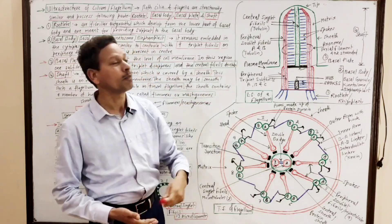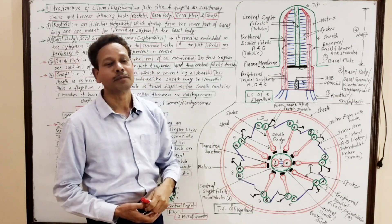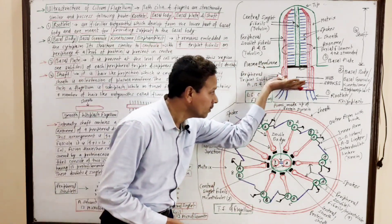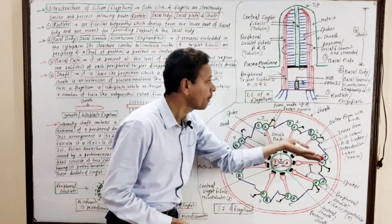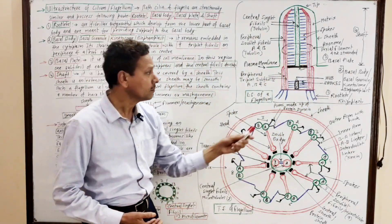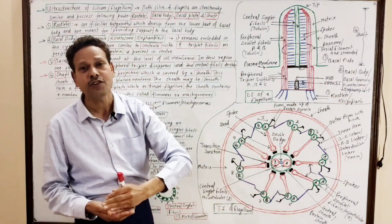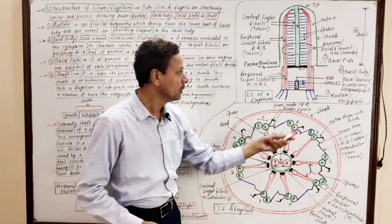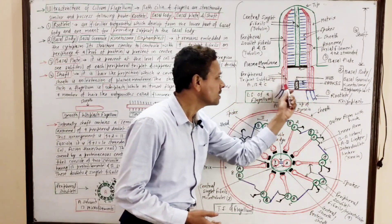The first part is rootlets or rhizoplast — fine hair-like outgrowths. These fiber-like structures develop from the lower part of the basal body, the basal granule. These rootlets or rhizoplast are meant for fixation and provide mechanical support to the basal body.